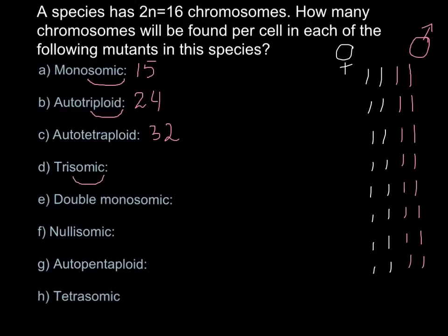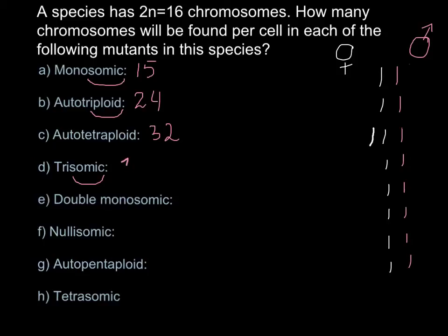Question D: Trisomic. 'Somic' here means the question is about number of chromosomes, and 'tri' means that one chromosome is present in three copies. For example, this could be any chromosome from the mother's side or male side. In this case, this gives us 16 plus 1 = 17 chromosomes.